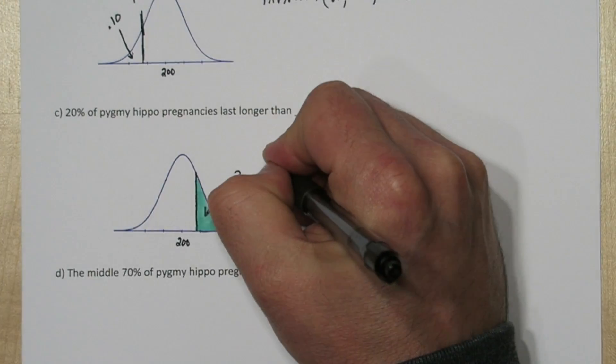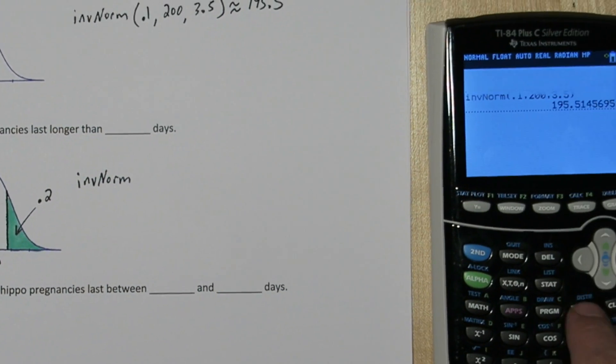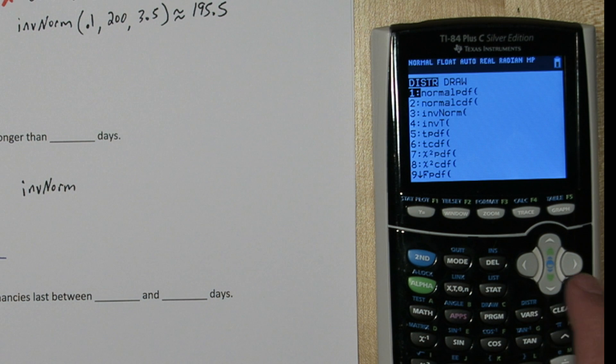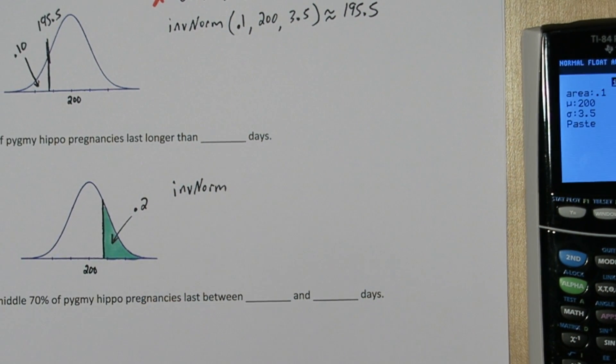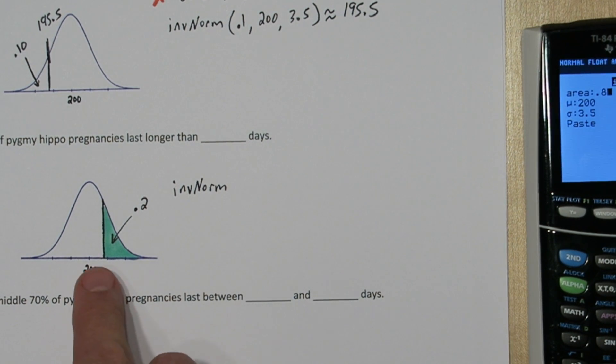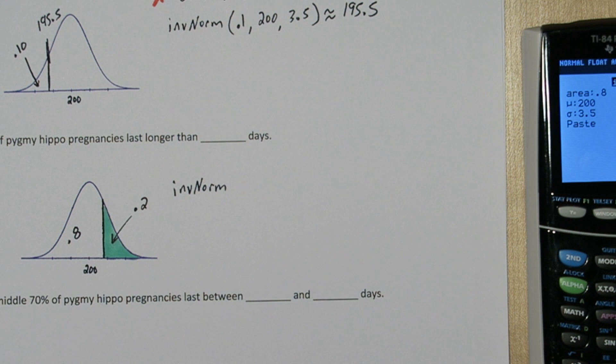So since we have the area and we want the cutoff, we'll use inverse norm again. So we'll press second, Vars, to get to the distribution menu. Our area to the left of the cutoff is 0.8. We know that because to the right of the cutoff is 0.2. That means this area down here must be 0.8.